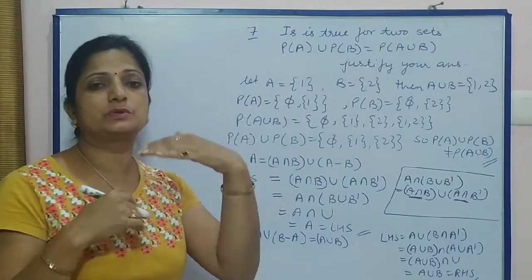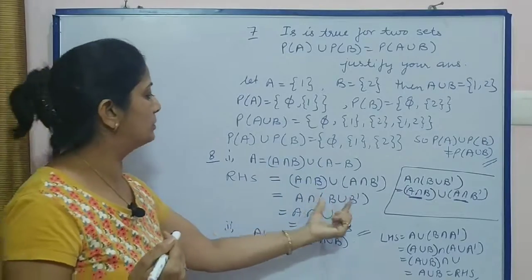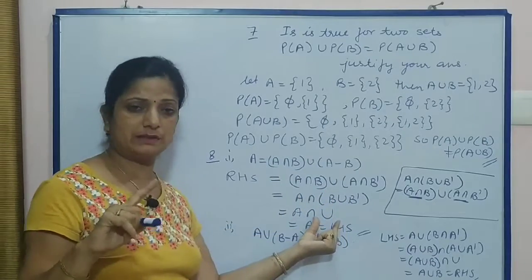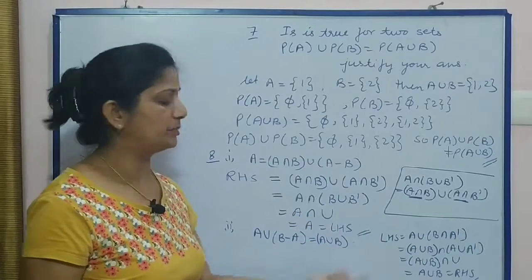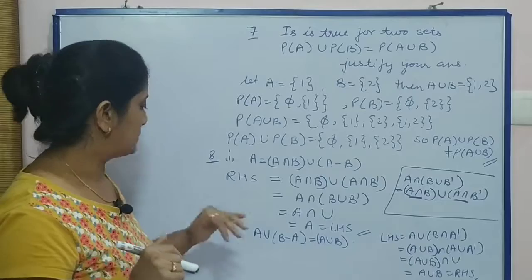And the intersection of any set with the universal set equals the set itself. That means we get A, which is our LHS. Now, second part is A union (B minus A).